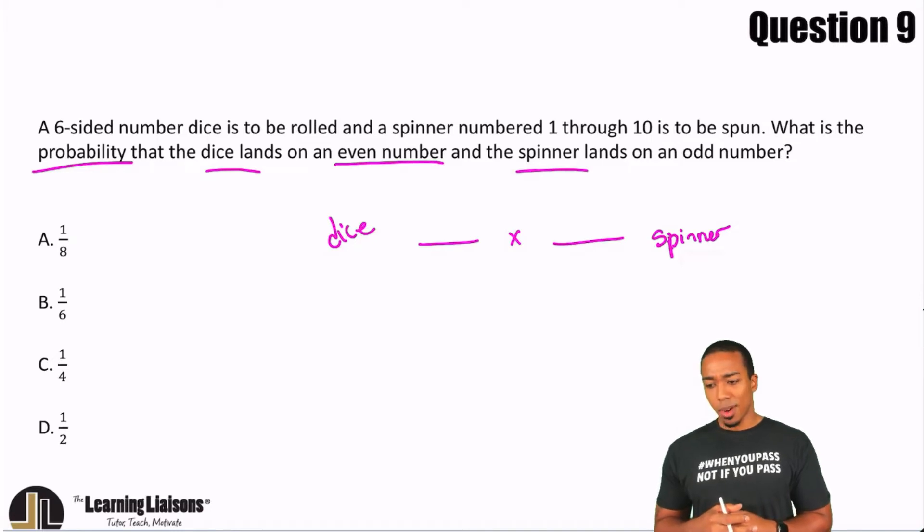Think about it. The numbers 1 through 6 are half even, half odd, so that's intuitively half for dice. You can count it yourself. Even numbers: 2, 4, and 6. Out of the six numbers, that's 3 out of 6, or half.